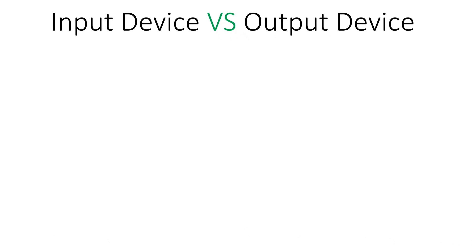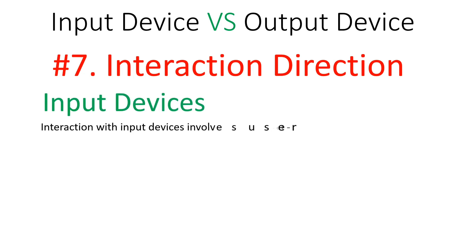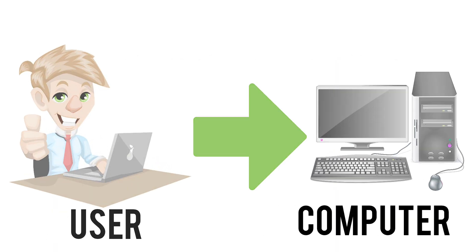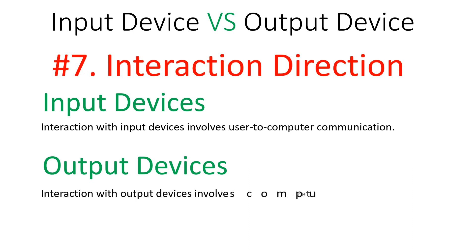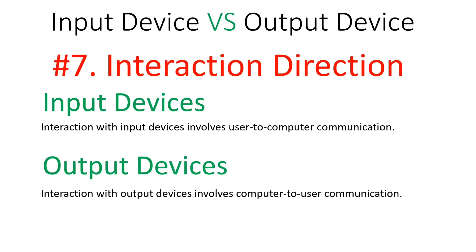Regarding interaction direction, input devices involve user-to-computer communication — the communication starts from the user to the computer. Output devices involve computer-to-user communication — the data is communicated from the computer to the user.